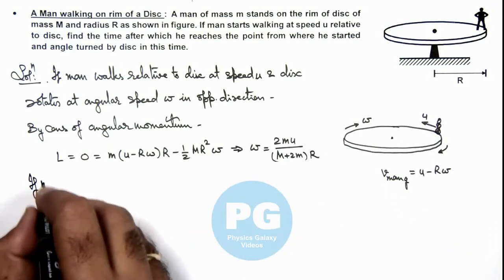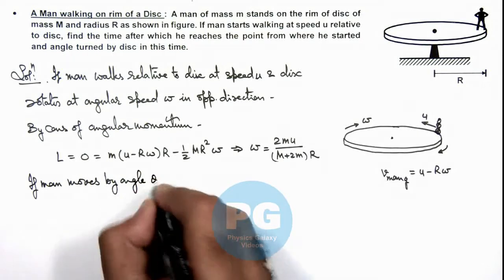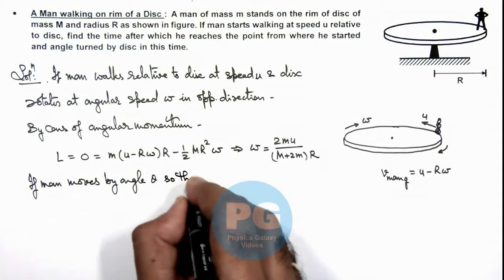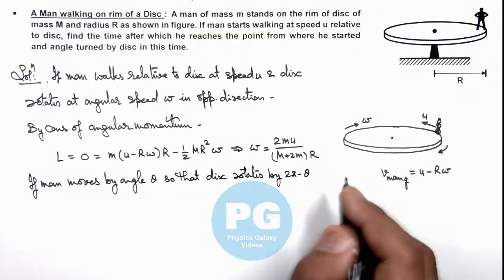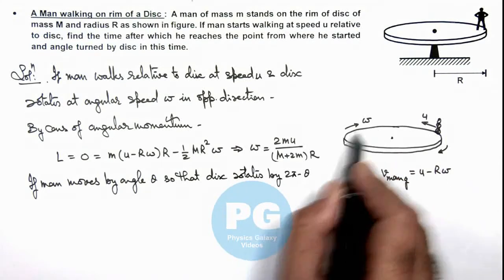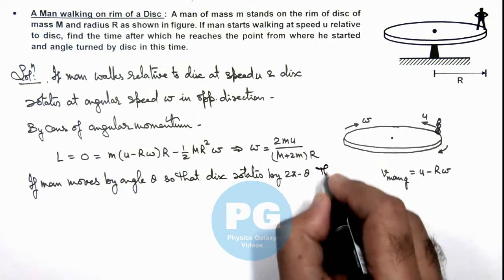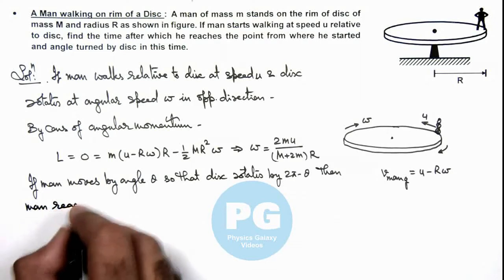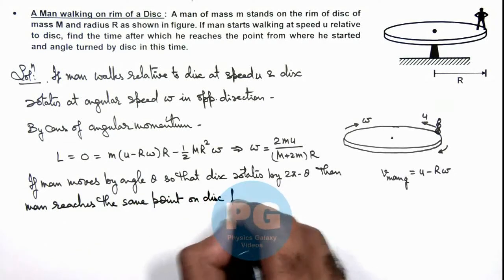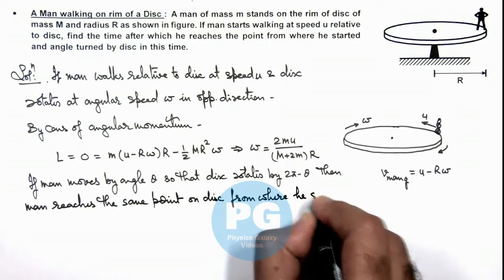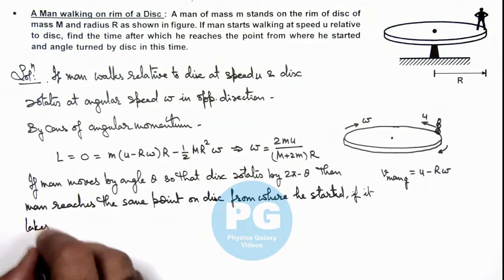Then we can write, if the man moves by an angle theta so that the disc rotates by 2π minus theta, that means if the man moves by theta and the disc rotates in the opposite direction by 2π minus theta, then the man will reach the same point on the disc from where he started. If it takes a time t, then we can use t equals theta divided by the angular speed of the man.